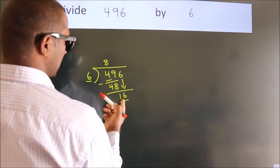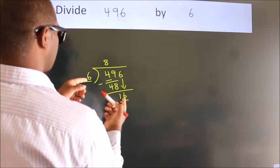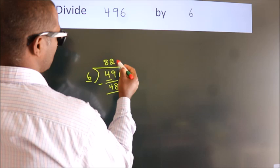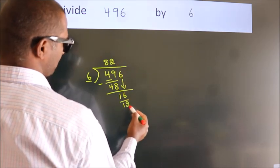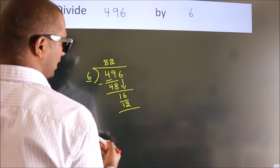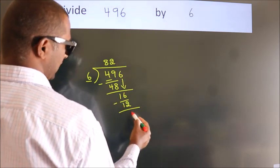A number close to 16 in the sixth table is 6 twos, 12. Now we subtract, we get 4.